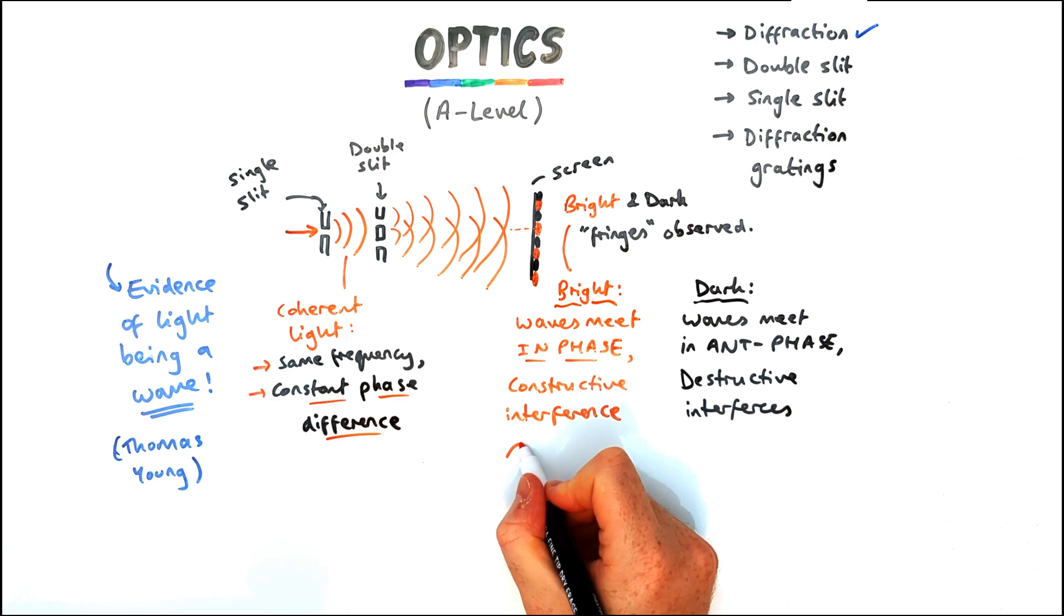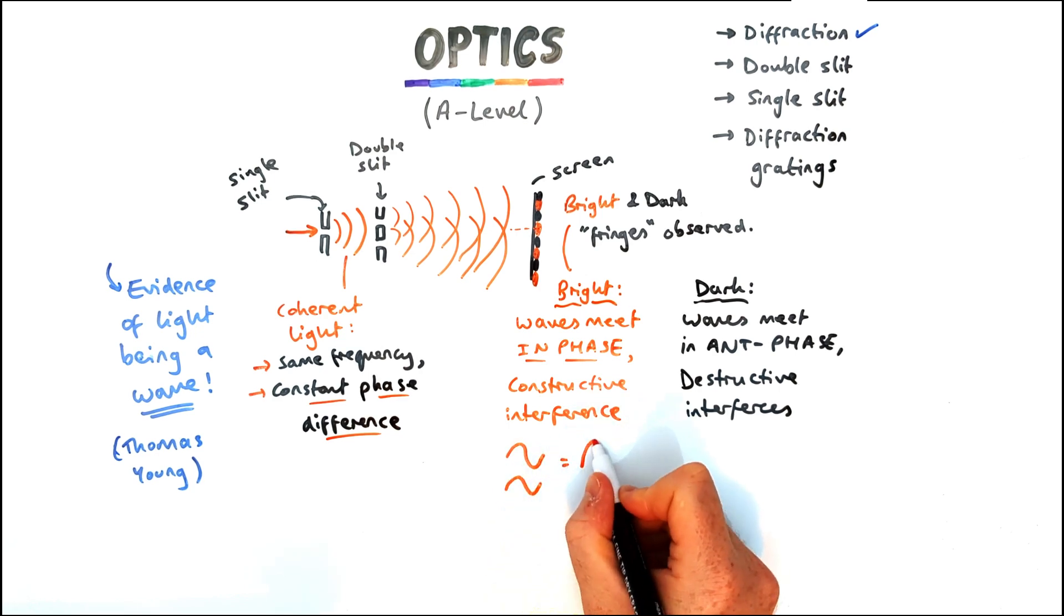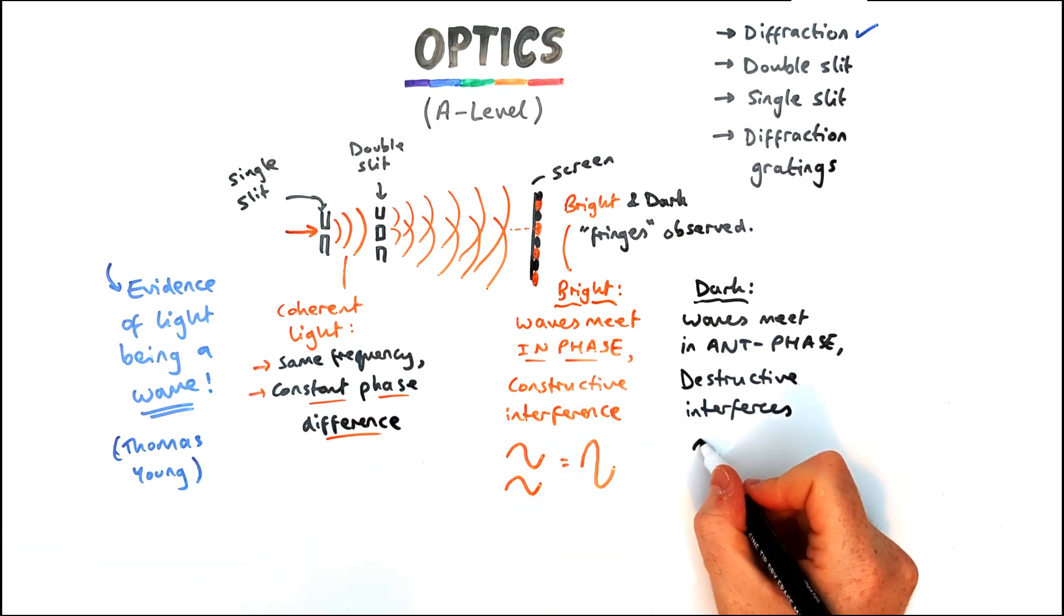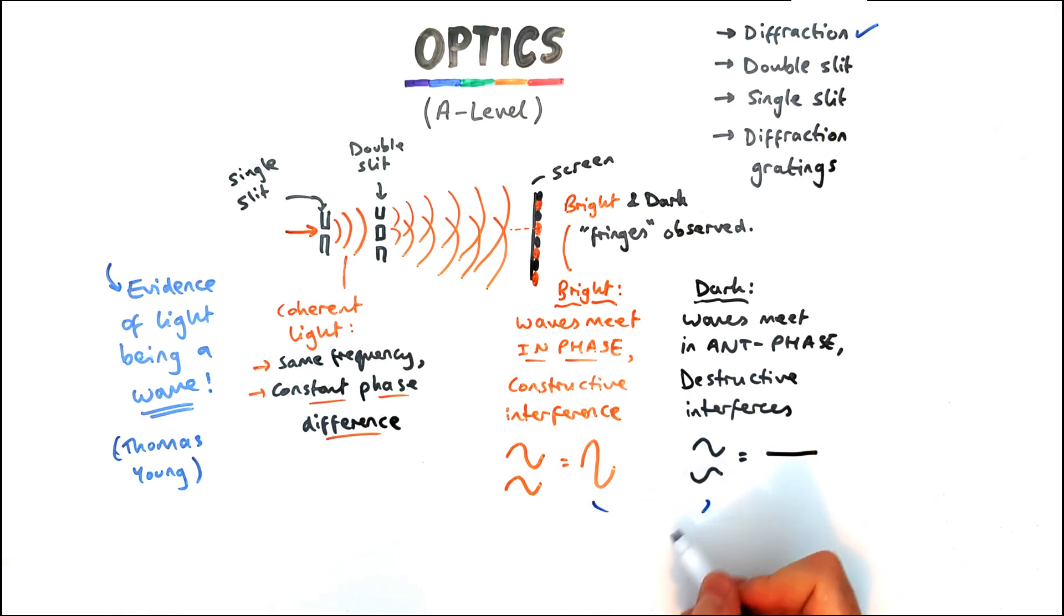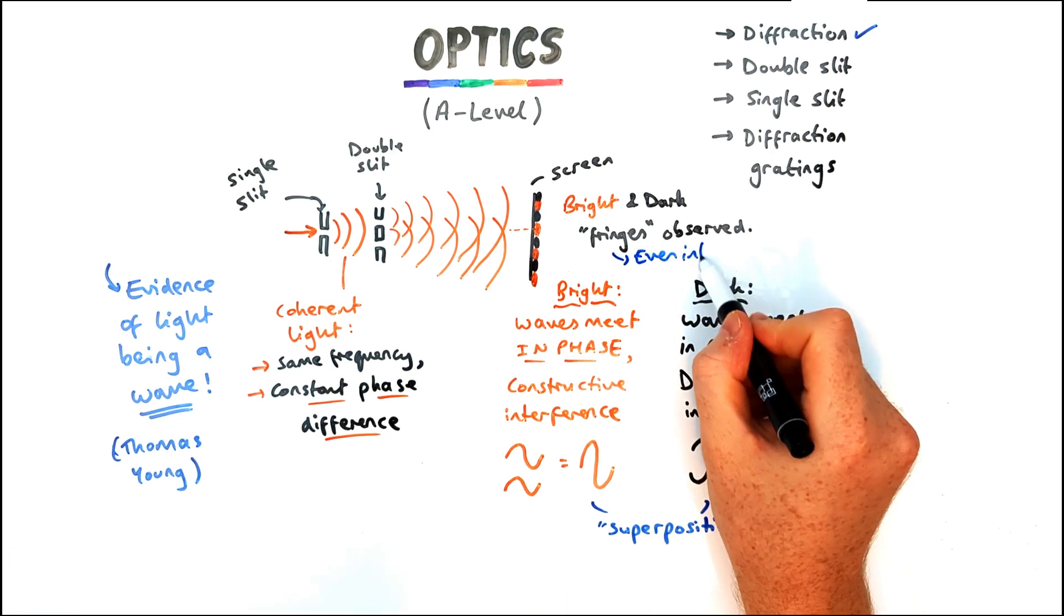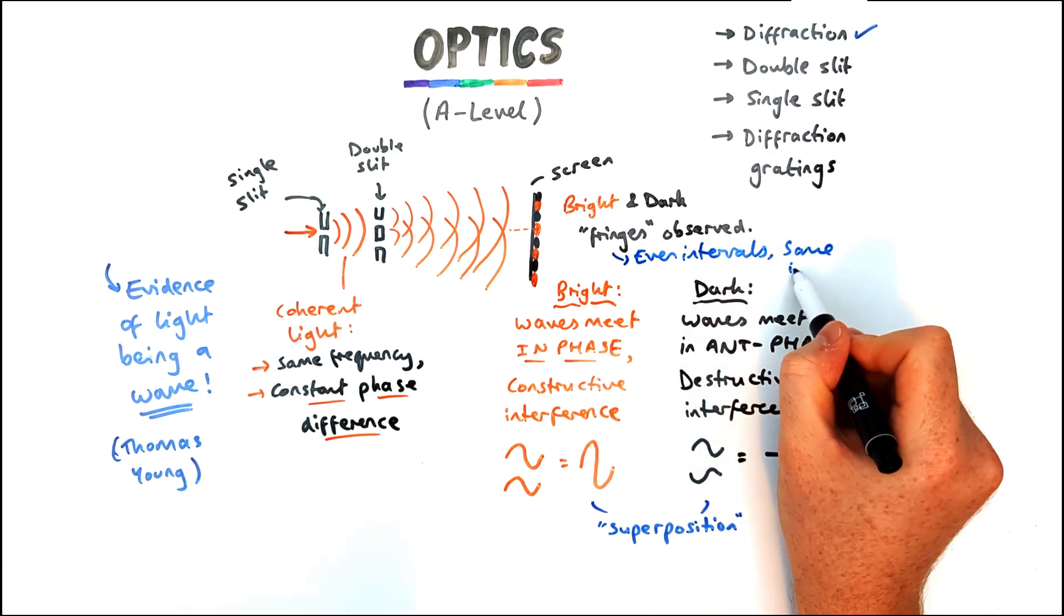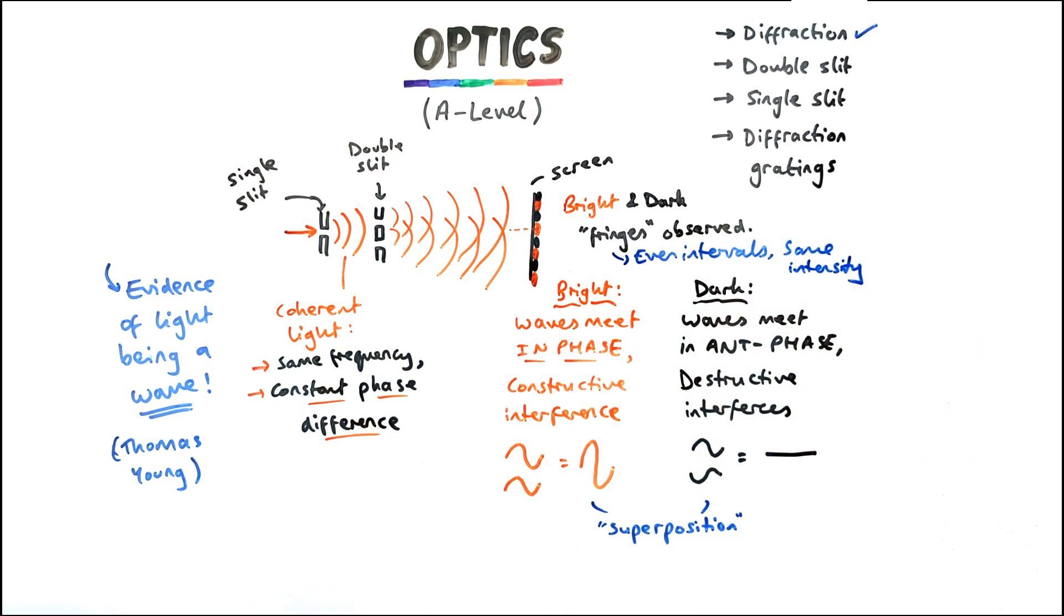So just like in the diagram here the two peaks line up means the amplitude is doubled and if the peak meets a trough that means the amplitude is zero. That means it's a dark spot. This effect overall is known as superposition and those fringes like we said are even intervals and they have the same intensity throughout.